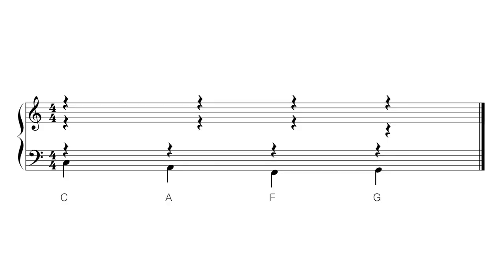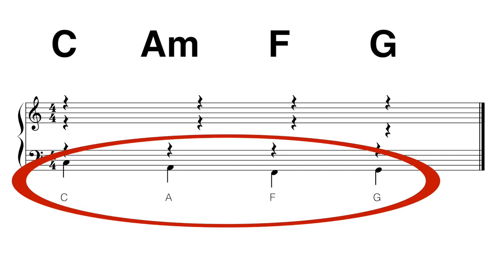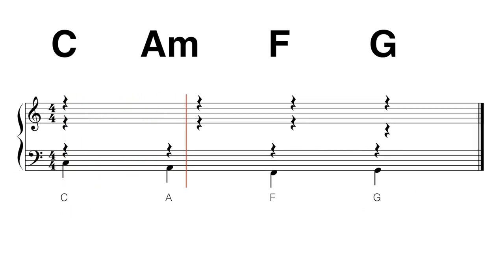So if the progression is C, A minor, F, G — as played by the piano — the cello would play C, A, F, G. Here's the chord progression and the bass line playing together. It is completely normal for a bass line to sound a bit jumpy.